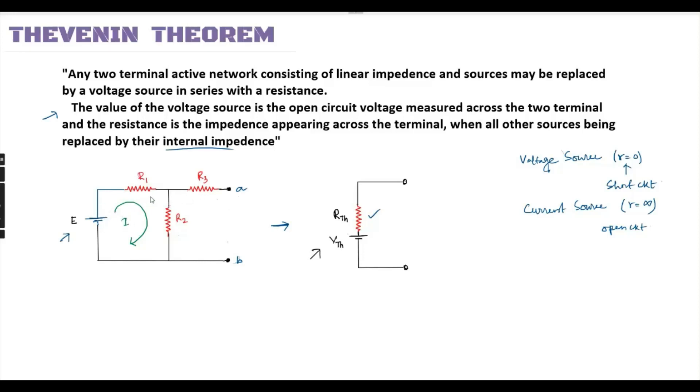To find open circuit voltage at terminals A and B, we consider current flow. The current I equals E divided by R1 plus R2. The open circuit voltage VTH is the voltage drop across the terminals. VTH equals I into R, which is E times R2 divided by R1 plus R2.